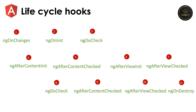The next hook is ngDoCheck. This is invoked during every change detection run, immediately after ngOnChanges and ngOnInit. Change detection is when Angular checks for changes in the data binding properties and updates the DOM accordingly. Every time input to a component is updated, this hook is triggered, so we see ngDoCheck trigger multiple times.